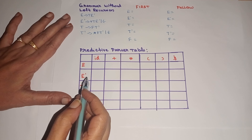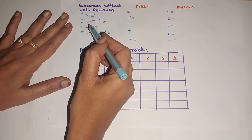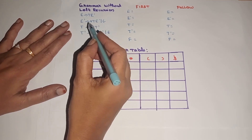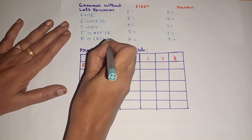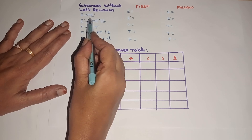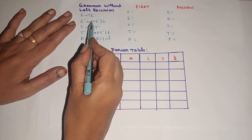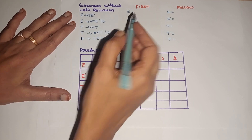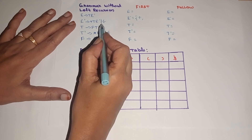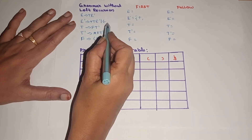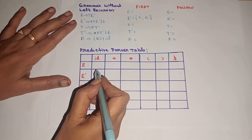Now let us go to the third step — computing first and follow. For easy computation, let us consider only variables which have a terminal as the first symbol in the right hand side. Starting with E-dash: the first symbol is plus, which is a terminal, so first of E-dash includes plus. E-dash also has a production E-dash tends to epsilon, so we include epsilon in first of E-dash. Thus, first of E-dash is {plus, epsilon}.